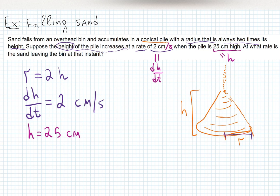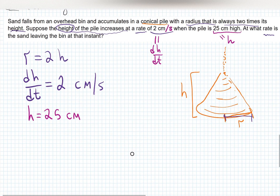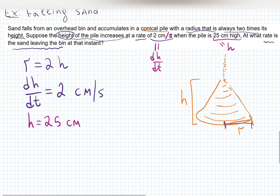Almost everything is given, but one thing is missing — the last sentence with a question mark. 'At what rate is the sand leaving the bin at that instant?' Rate keywords tell me another rate is asked for. The sand leaving the bin and accumulating — that's talking about the volume of the total sand, so we're looking for dV/dt.